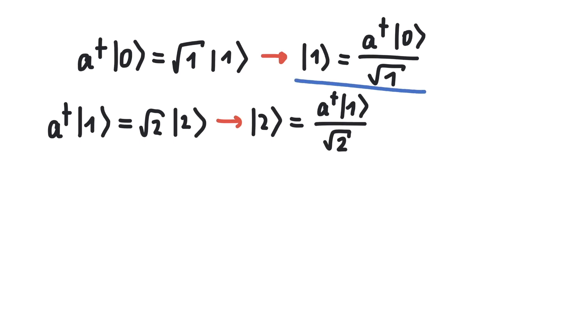And we already calculated what the state |1⟩ will be. So this is simply a† applied twice on the ground state, divided by √1 times √2. This pattern goes on.